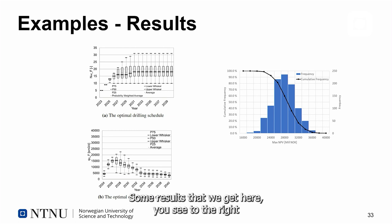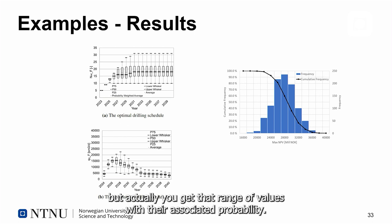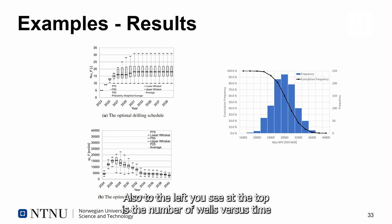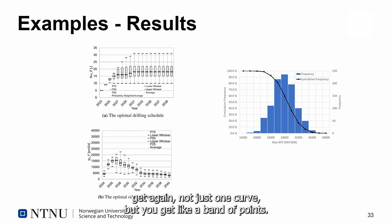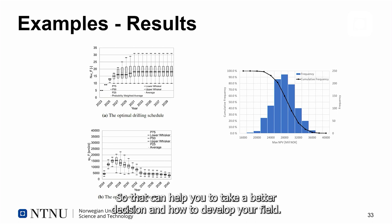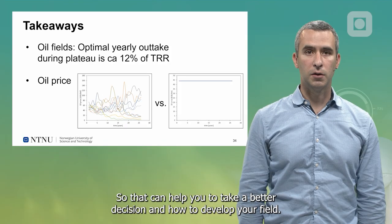Some results that we get here, you see to the right, the value of the project on the x-axis and the probability on the y-axis of each one of these values. You not only get that number, but actually you get that range of values with their associated probability. To the left at the top is the number of wells versus time that you should drill, the optimal drilling schedule. You don't get just one curve, but you get like a band of points. At the bottom you see the rate of oil with time. That can help you to take a better decision on how to develop your field.